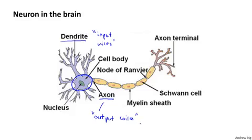At a simplistic level, what a neuron is is a computational unit that gets a number of inputs through its input wires, does some computation, and then sends outputs via its axon to other nodes or other neurons in the brain.